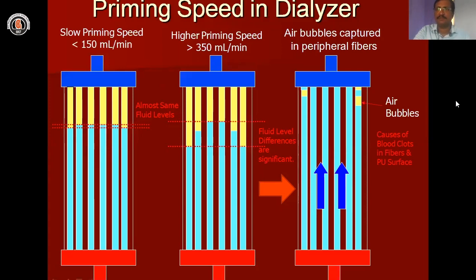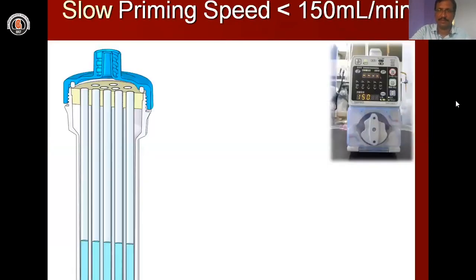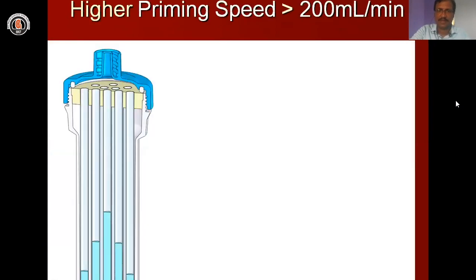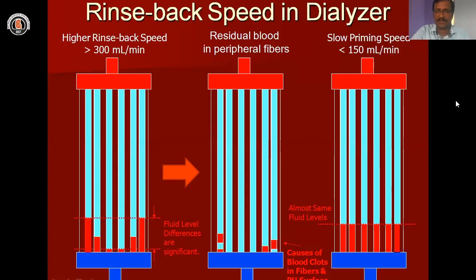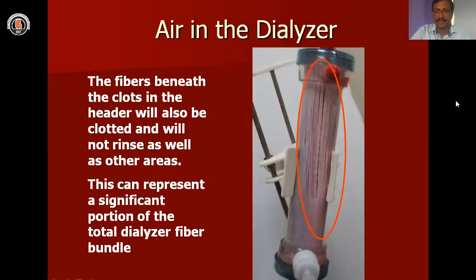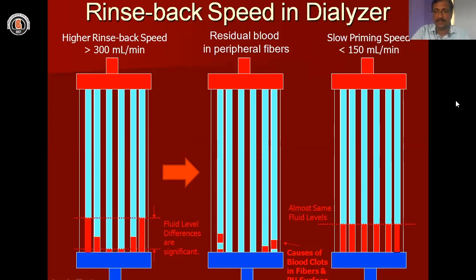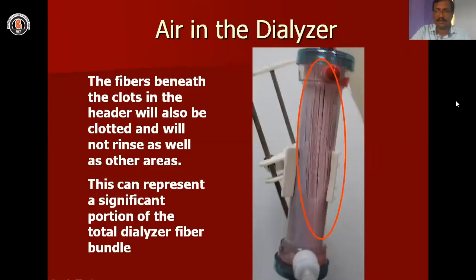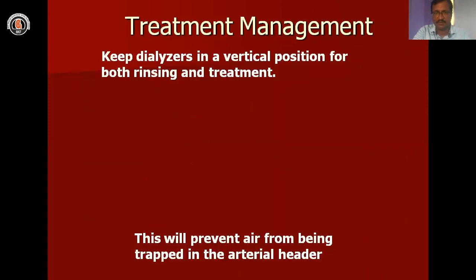The priming speed in dialysis should be kept at less than 150 ml per minute. Whenever you keep a higher blood flow rate, more air bubbles will form inside. Always prime your dialyzer at 150 ml per minute. If you prime at a higher speed, you can see more air bubbles forming inside the dialyzer. Most of the membranes you see in such cases will be clotted. There may be other causes and complications you may face as well.